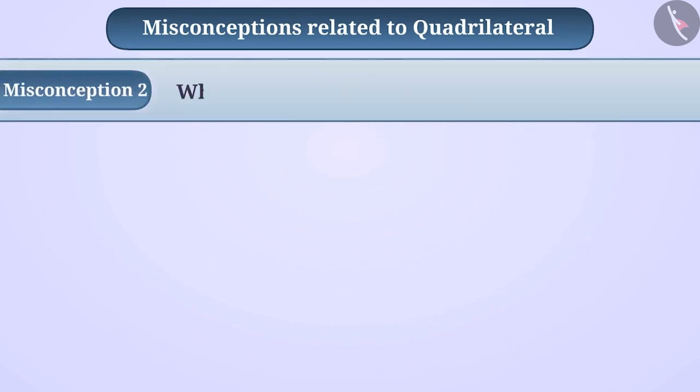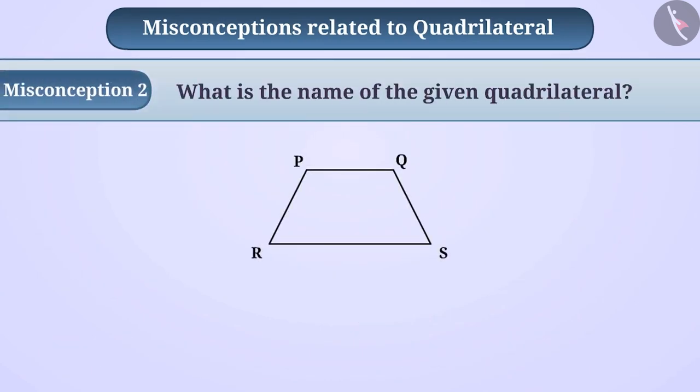Common Misconception 2: What is the name of the given quadrilateral? Some children have this misconception that the name of a quadrilateral can be written in any order. In the given figure,